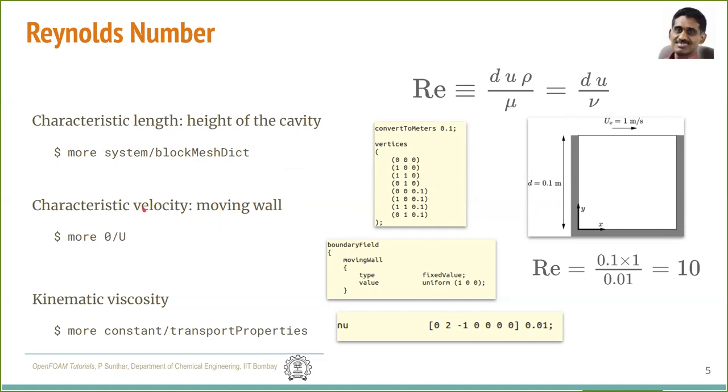The characteristic velocity is the imposed velocity of the wall. And this is defined in the initial condition file, capital U under the directory 0. Inspecting this file, we find that the moving wall has a velocity equal to 1 meter per second in the x direction. Therefore, the Reynolds number is 0.1 for the height, 1 for the velocity and 0.01 for the kinematic viscosity.